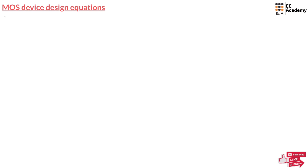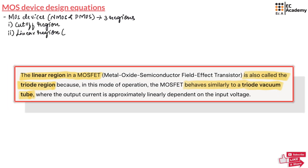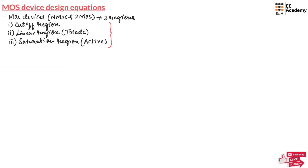MOSFET devices like NMOS and PMOS operate in three regions: cutoff region, linear region (also known as triode), and saturation region (also known as active region). In these three regions, the MOSFET transistors follow different equations.